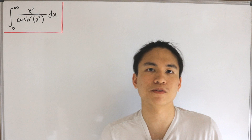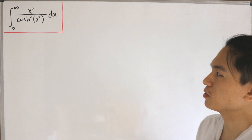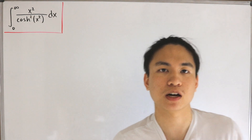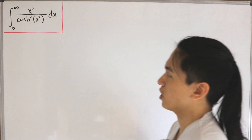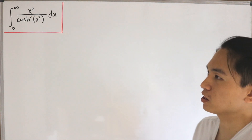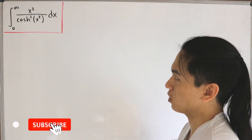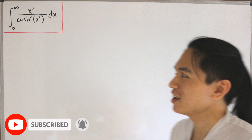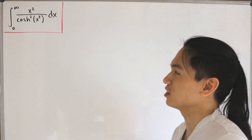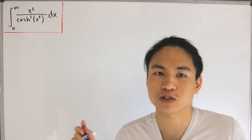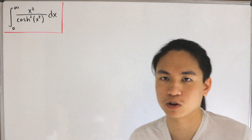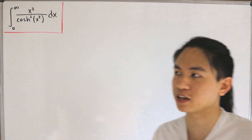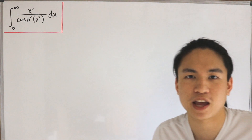We have another improper integral to deal with. Inside our integrand we have the hyperbolic cosine function, specifically x squared divided by the hyperbolic cosine squared of x squared dx. This is a pretty interesting problem that mainly involves implementing elementary calculus techniques — u-substitution and integration by parts.